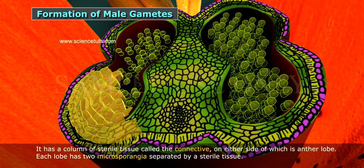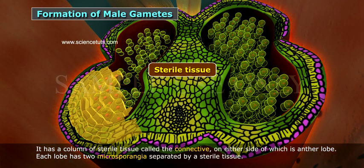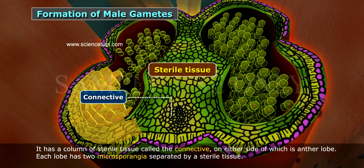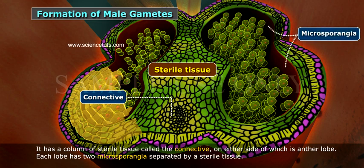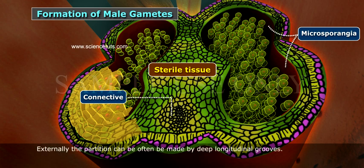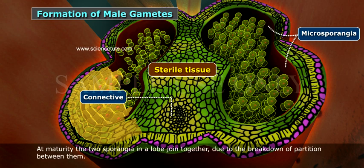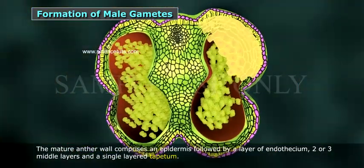The anther has a column of sterile tissue called the connective, on either side of which is an anther lobe. Each lobe has two microsporangia separated by a sterile tissue. Externally, the partition can often be identified by deep longitudinal grooves. At maturity, the two sporangia in a lobe join together due to the breakdown of the partition between them.